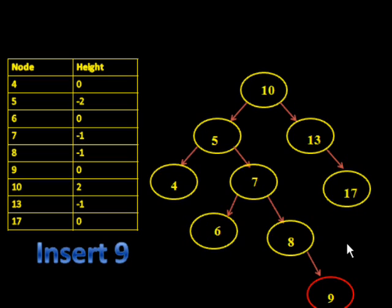Here I have another example for you. We just inserted a new number here, 9, and now, way up high, the node at 5 is unbalanced. Well, we have to fix that.